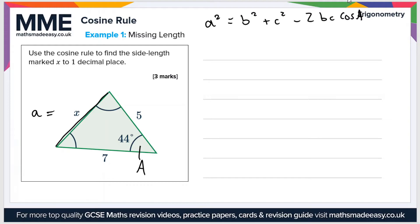Now it doesn't matter which sides we choose as b and c. So let's just say that 5 is b and 7 equals c.